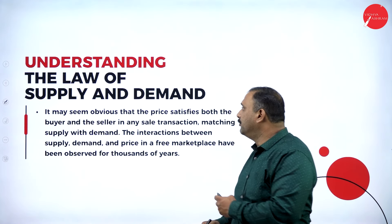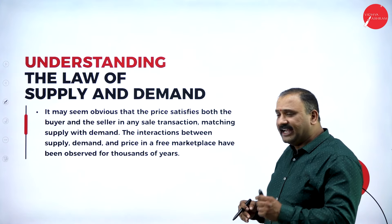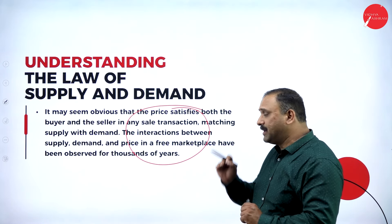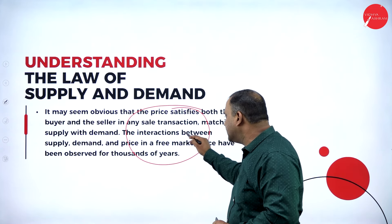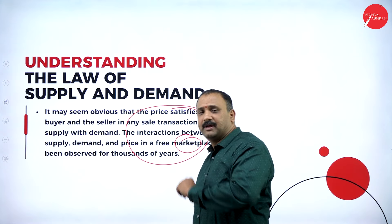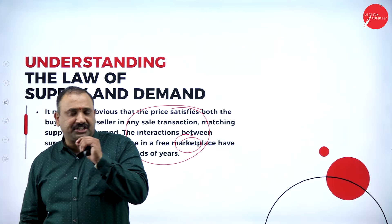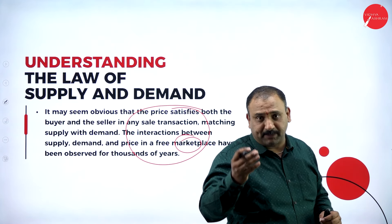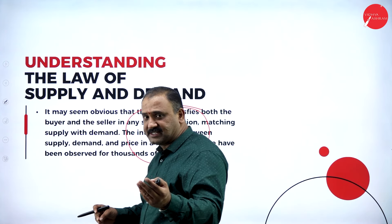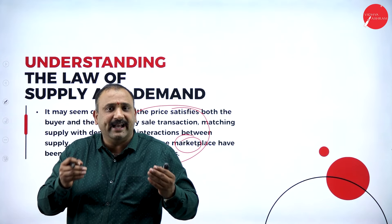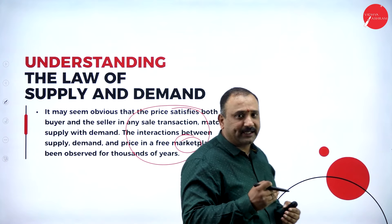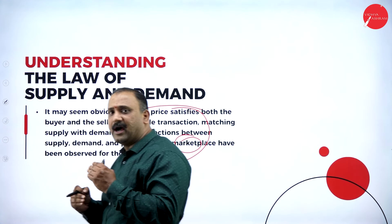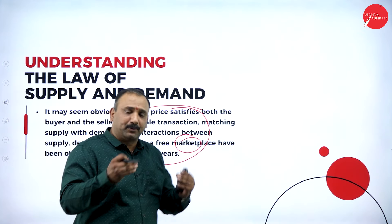It seems obvious that price satisfies both buyer and seller at any transaction, matching supply and demand. This interaction between supply, demand, and price in a free marketplace has been observed for thousands of years. No buyer or seller just blindly accepts what the market says. If you go to a market and the seller says a product is priced at 50 rupees, you would try to bargain, check other shops, and find if you can get it at a lower price.